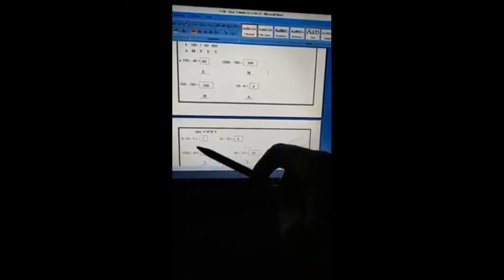B: 10 minus 3 we get 7, which is F. 54 minus 50, answer is 4, which is A. So here we need to write F, and the code is missing here, it will be F. And here will be 4, which is A. So F, A.